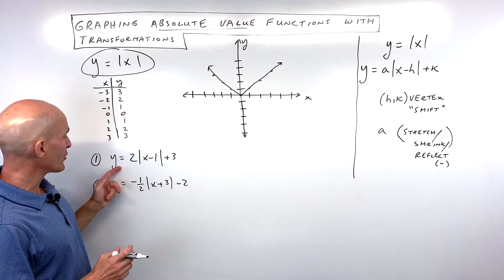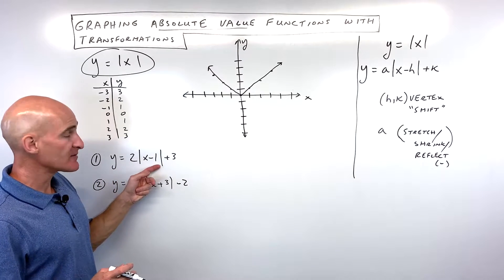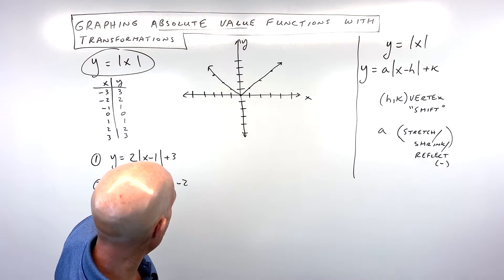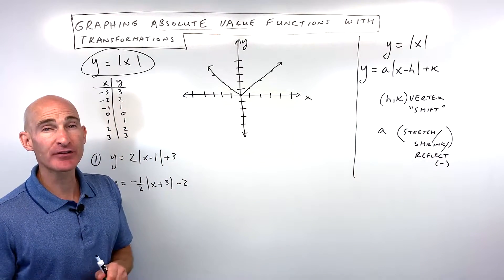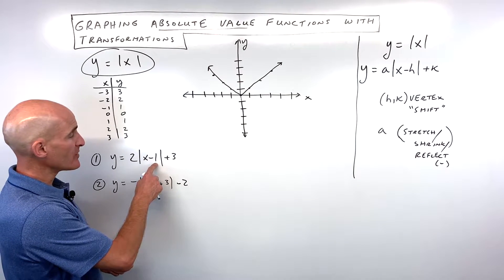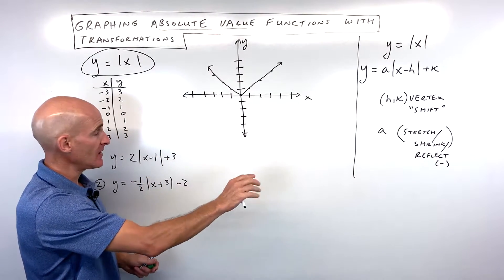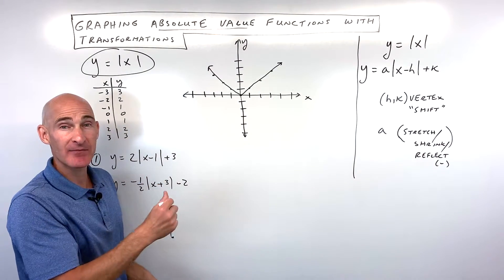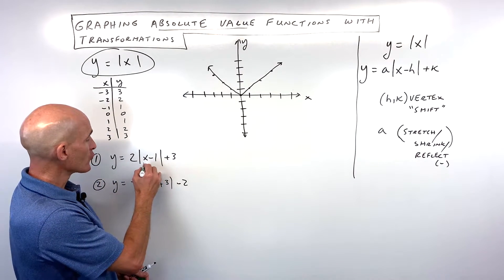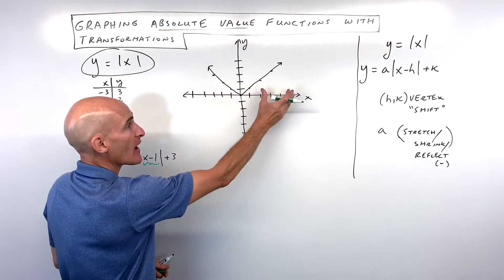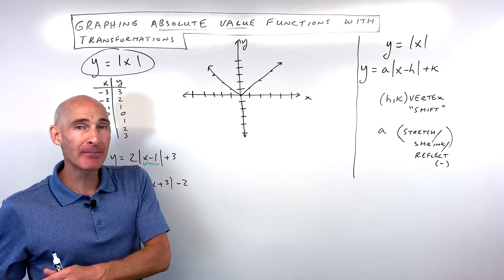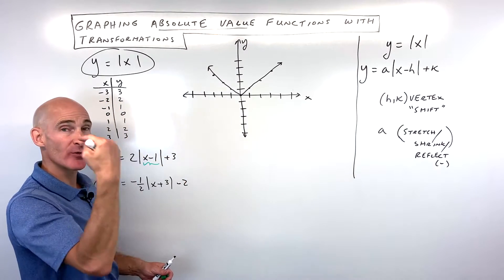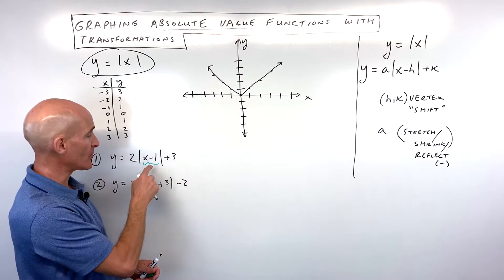Let's go to example one: y equals two times the absolute value of x minus one, plus three. I like to think of the shift first. The minus one means we're shifting to the right one, and the plus three means up three. You might say, isn't minus one a shift left? The number grouped with x shifts the graph in the x direction but has the opposite effect — minus one means we actually go positive one, and plus one would mean negative one. So remember, the h value is opposite.